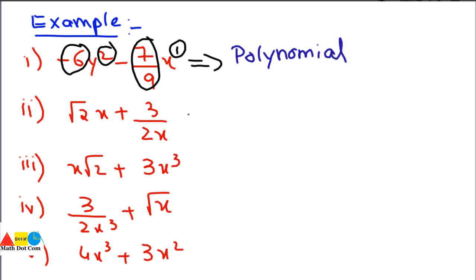Moving to the next example, we check all three conditions. Condition 1: the exponent of x is 1, which is non-negative, but x is in the denominator. When moved to the numerator, its power becomes negative. So this condition is not satisfied and we cannot categorize the expression as a polynomial — it is not a polynomial.